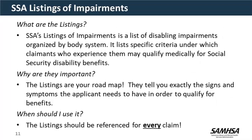SSA's listings of impairments — what are the listings? It is a list of disabling impairments organized by body system. It lists specific criteria under which claimants who experience them may qualify medically for Social Security disability benefits. The listing — or Blue Book — is important because it's essentially our roadmap. If we're not able to meet a listing, it can give us direction on how to further develop the claim or determine the severity. We want to reference our listings with every claim and every condition, ensuring we're referencing all impairments that correlate with that listing.